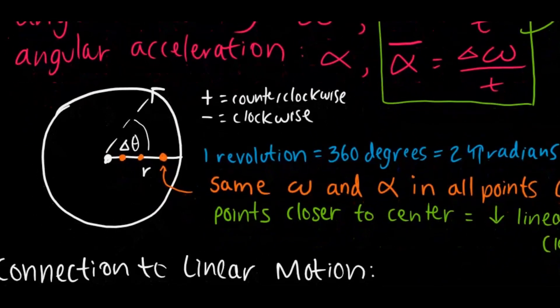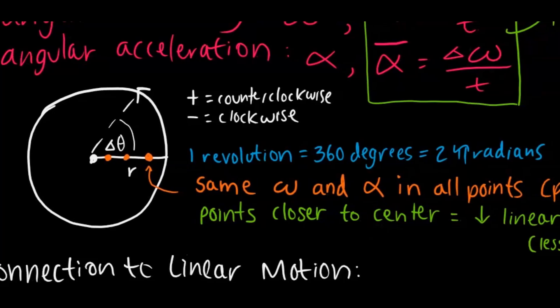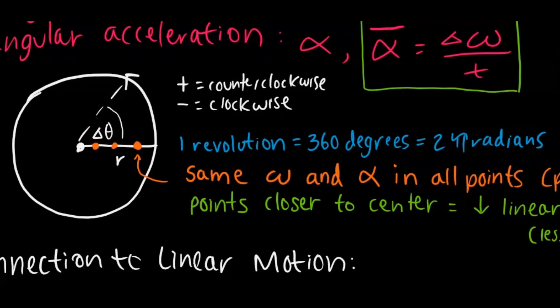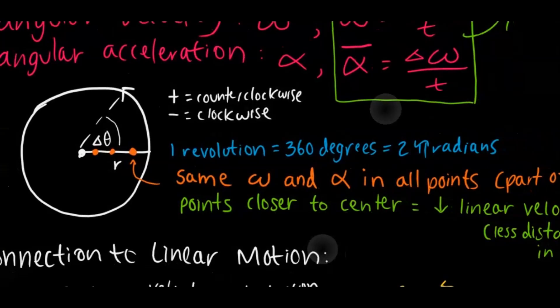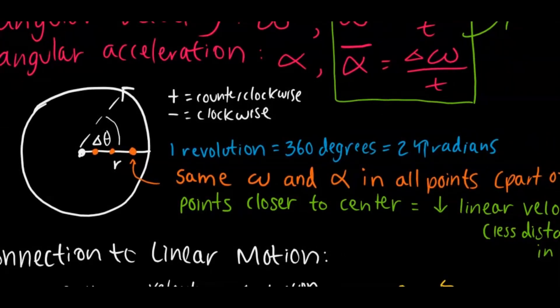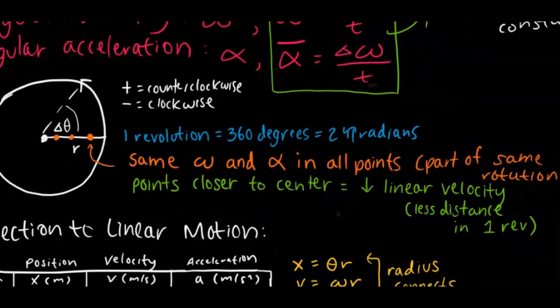Here's a diagram of a circle representing this angular kinematic breakdown. The positive direction is defined as counterclockwise, and the negative is defined as clockwise. As the object rotates, that causes a change in angular position. One revolution is equivalent to 360 degrees, which is equivalent to 2π radians. You want to know those conversions, because questions may give you radians and want an answer in revolutions.